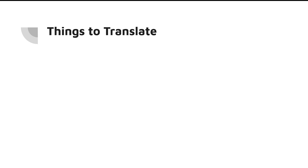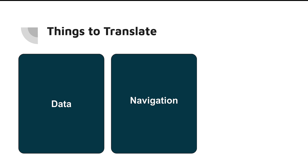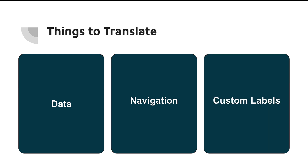When you're considering translating and expanding your storefront from a single language to multiple languages, there are really three key areas you need to think about. First is the data — all of the product information, category information, and anything else that shows up on the storefront. The second thing is navigation — how to go from a product page to a category page to an account page, and any other sections you have. And lastly is custom labels, which custom components typically use to make changes and updates to text, and we want to make sure those are translatable as well.